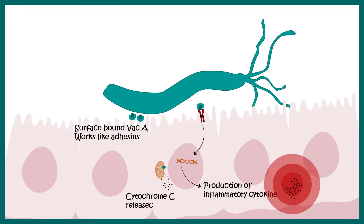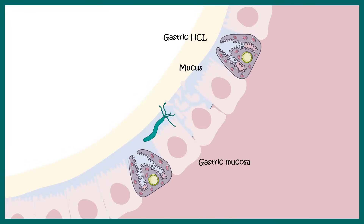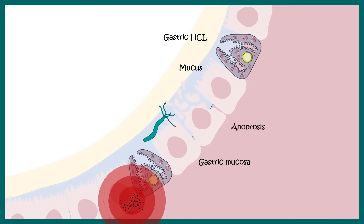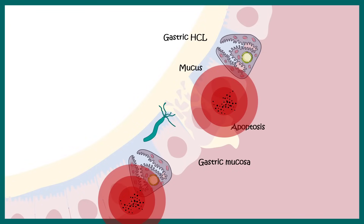VAC-A can also bind to the mitochondrial membrane and allow the leakage of cytochrome c. When cytochrome c is released, apoptosis is triggered. In the gastric mucosa, there would be apoptosis of the cells and inflammation, and all of these lead to further inflammation and leaking of the gastric HCL into the mucosa, which ultimately leads to ulcer formation and gives that pain sensation when your stomach is empty.